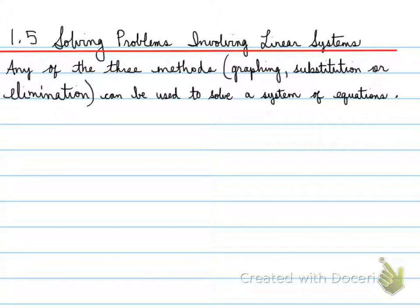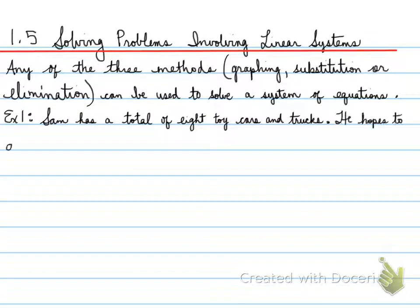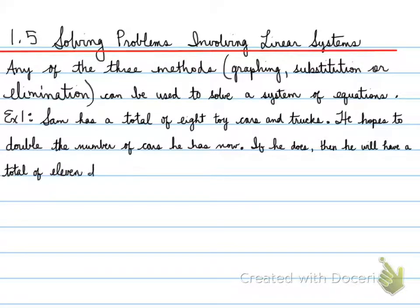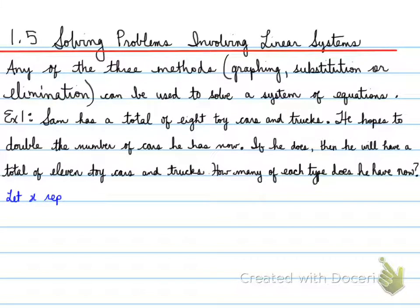We're going to look at three types of word problems here in this question. The first one, example one: Sam has a total of eight toy cars and trucks. He hopes to double the number of cars he has now. If he does, then he will have a total of 11 toy cars and trucks.